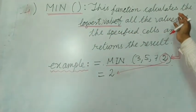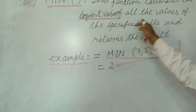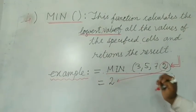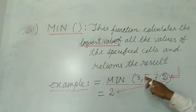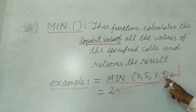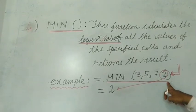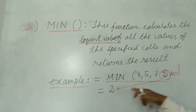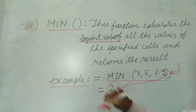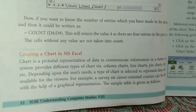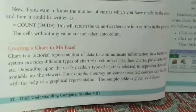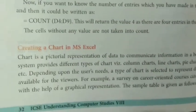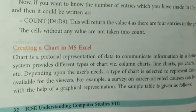The fourth function is MIN. This function calculates the lowest value of all the specified cells and returns it. Example: =MIN(3, 5, 7, 2) — the smallest or lowest number is 2, and that will be displayed in the cell.